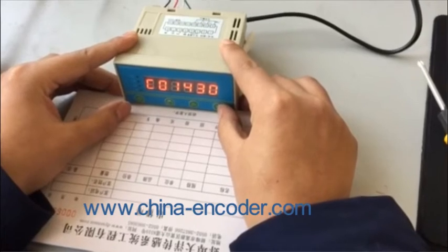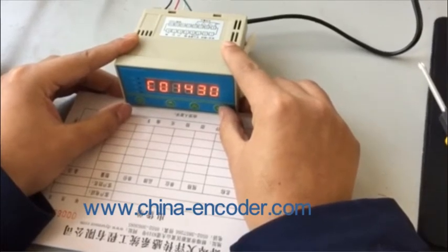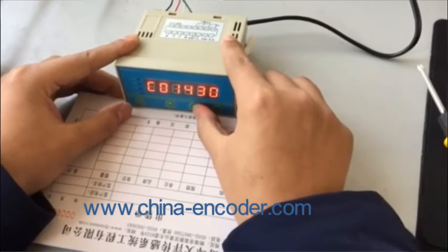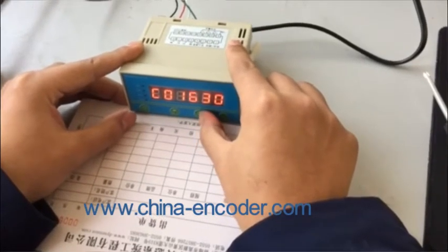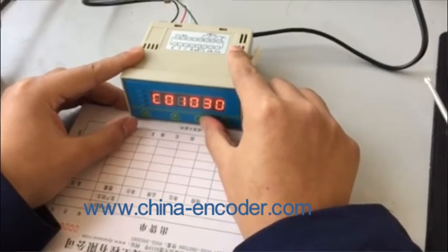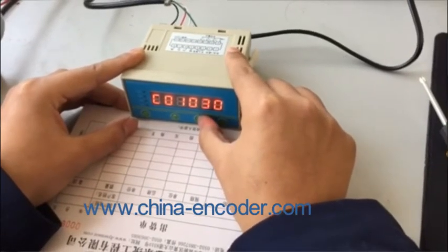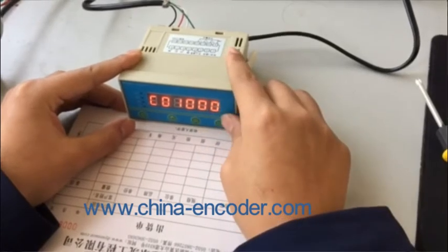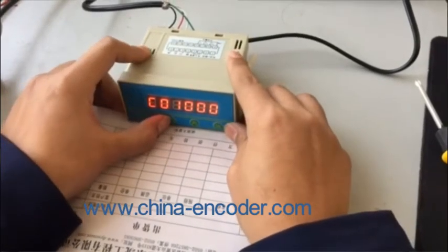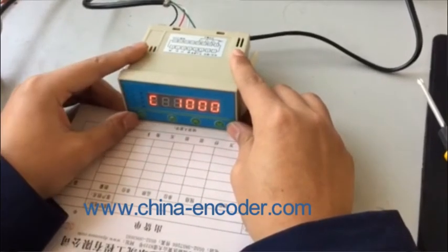First press K4, the key is to move the flashing position to the position to be modified. Because we want to change it to 1000, press K3 to increase the flashing position value. Adjust the value to 1000 by switching between K3 and K4.